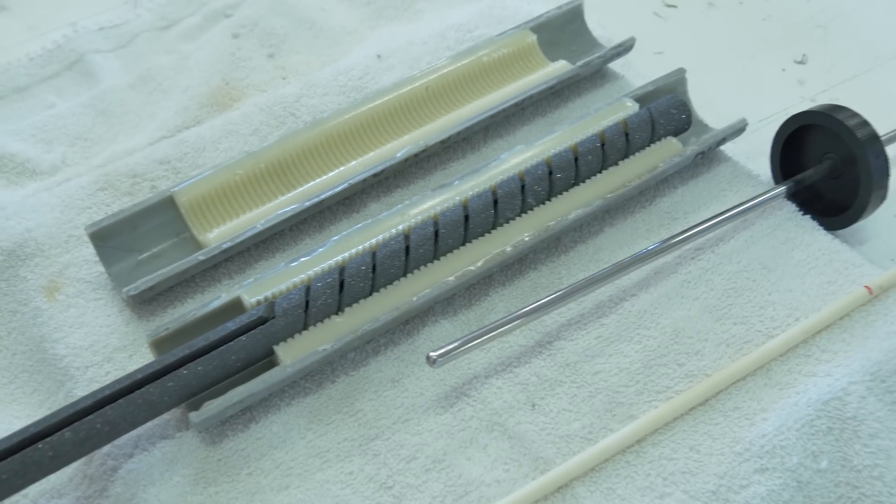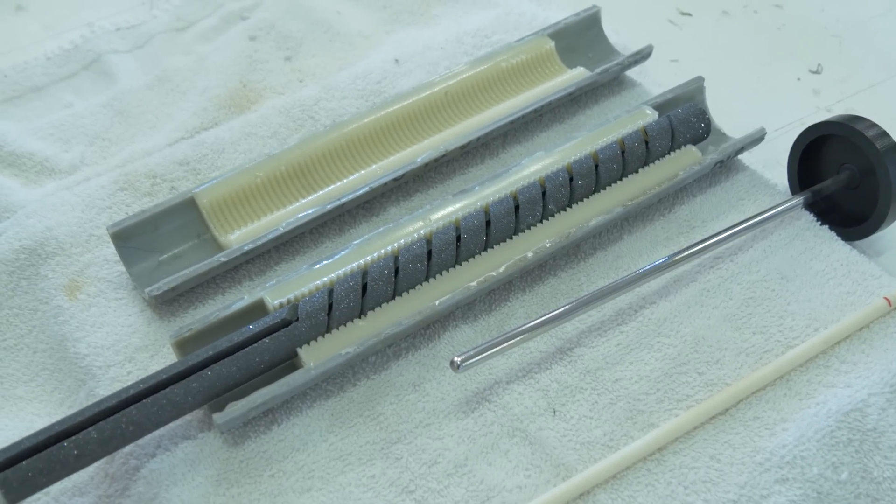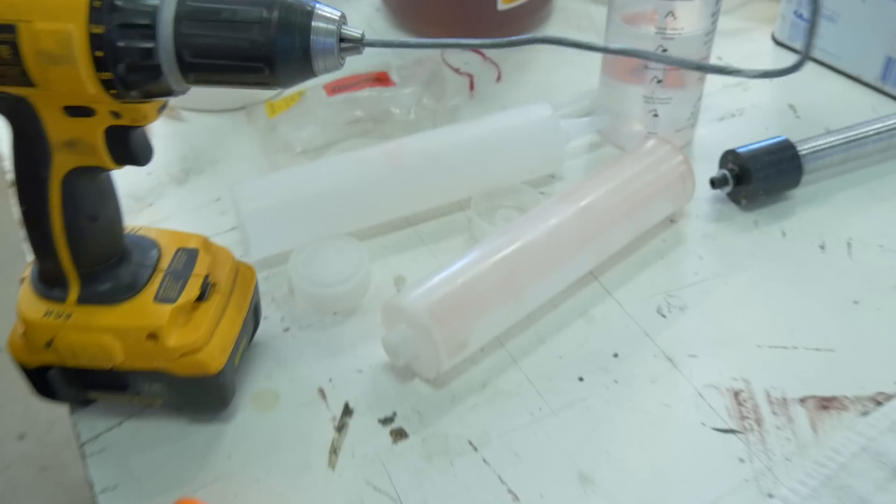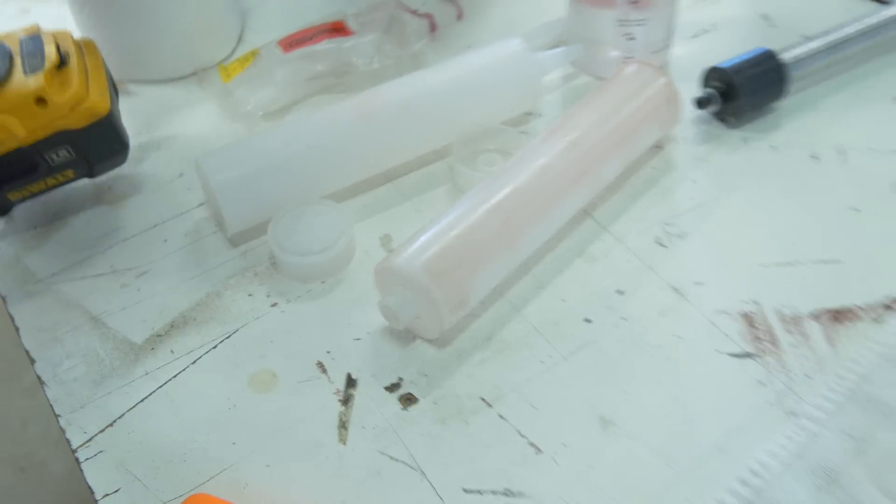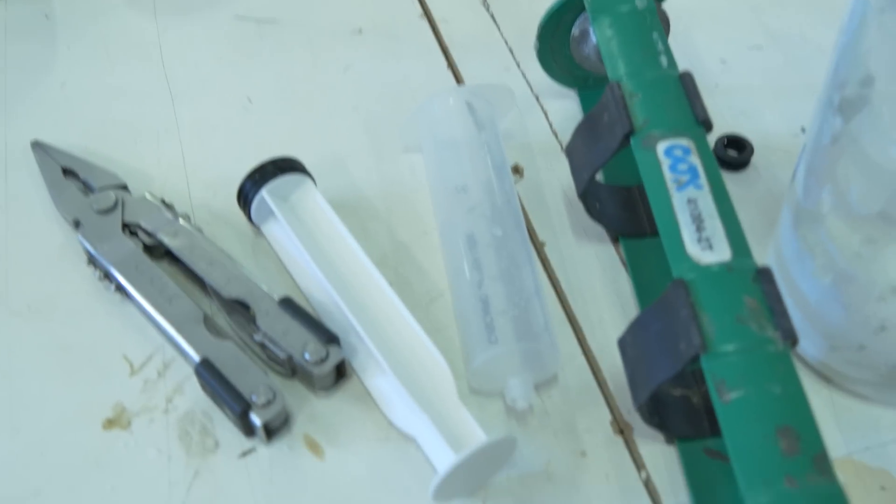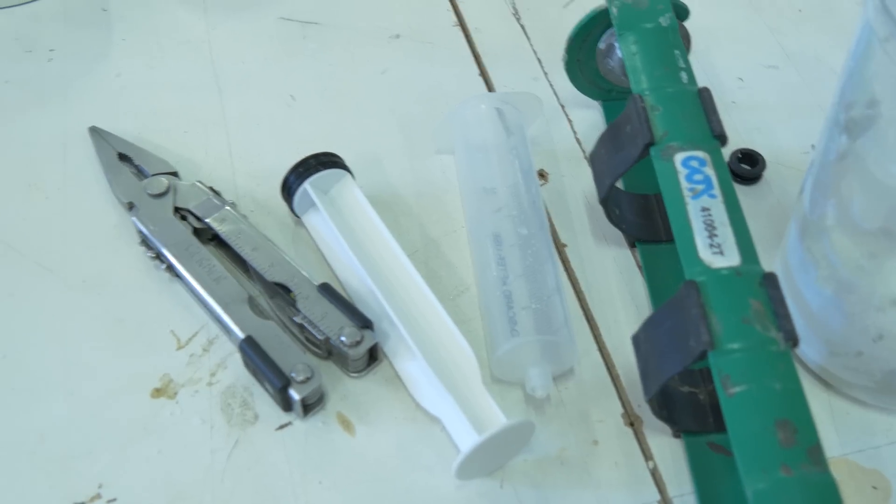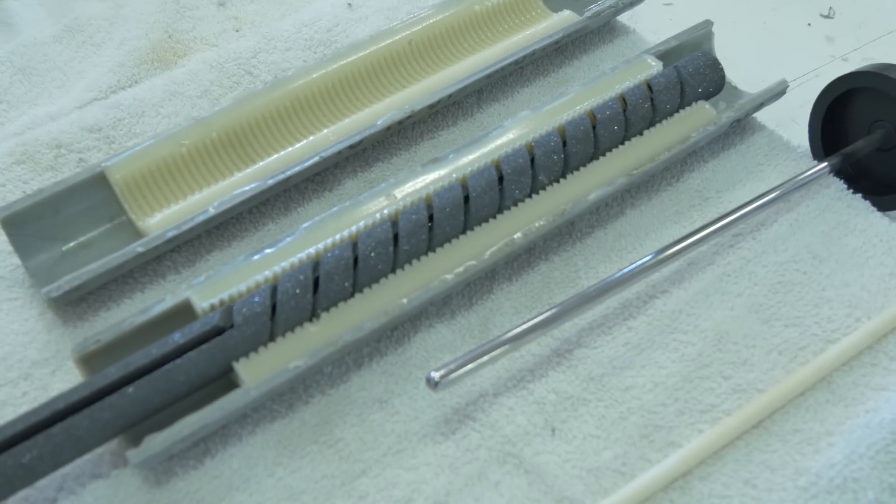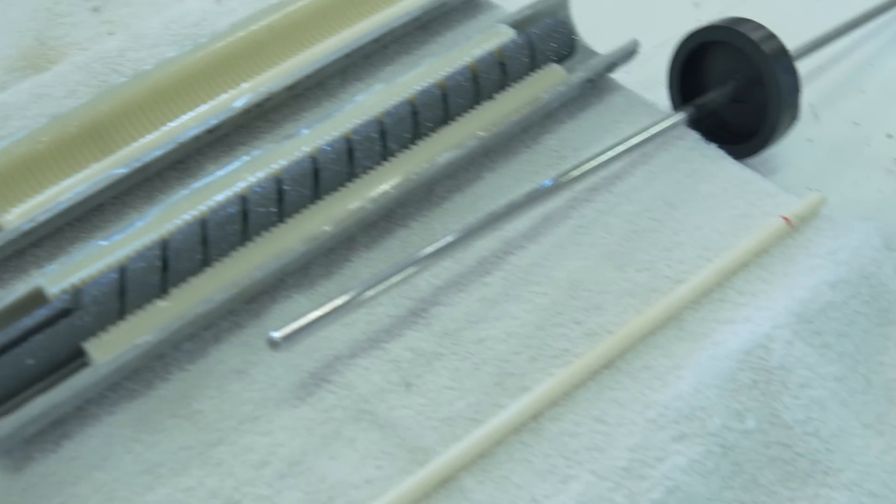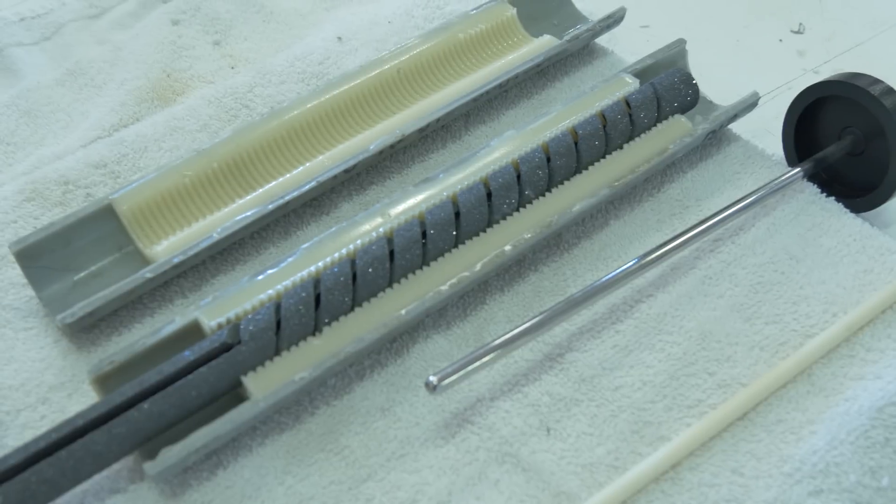So the question is, we have an issue. We tried the caulk guns over here and we tried this little syringe over here, but it's just too tough to push the castable ceramic through. So what's the plan?